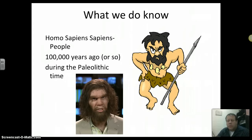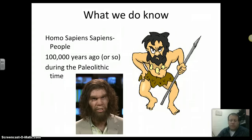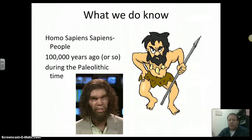The big question is: what do we know? We know that Homo sapiens sapiens were people — they were us. We might call them cavemen or Cro-Magnon, any of those terms. According to the theories of scientists and anthropologists, we appear about 100,000 years ago, give or take, during the time of the Paleolithic.